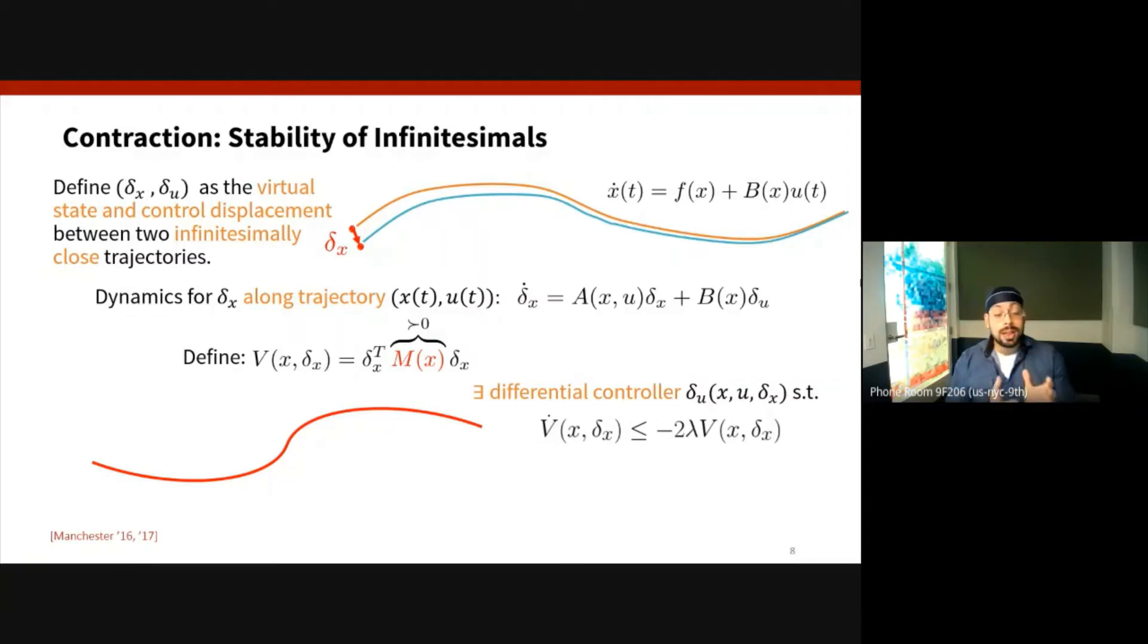So the picture in your head should be that if this red curve represents a state space trajectory of our system, then this differential controller is essentially stabilizing the infinitesimal variations along this curve. The picture should be this bowl-like diagram which represents the level sets of our function V, and the variations δx are essentially going to lower and lower level sets of the function V as we're following along this trajectory.